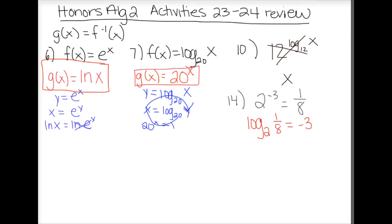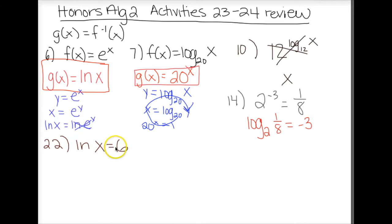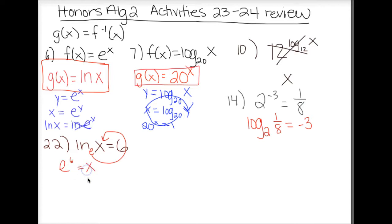The next one starts with a logarithmic statement and we write it as an exponential. Using the swoop method to go from logarithmic to exponential — remember that the base of the natural log is understood to be e. So this would be e to the sixth equals x.